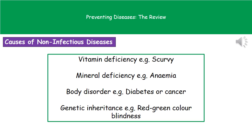The second cause is a deficiency of minerals — for example, anemia, which is caused by a lack of iron in your diet. You can also have body disorders, such as diabetes or cancer. And finally, there are inherited diseases, which are caused by your own genes — for example, red-green colour blindness.